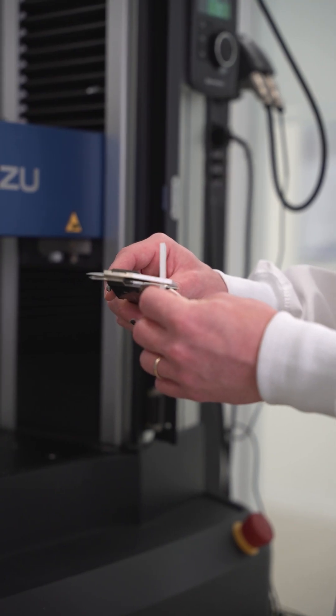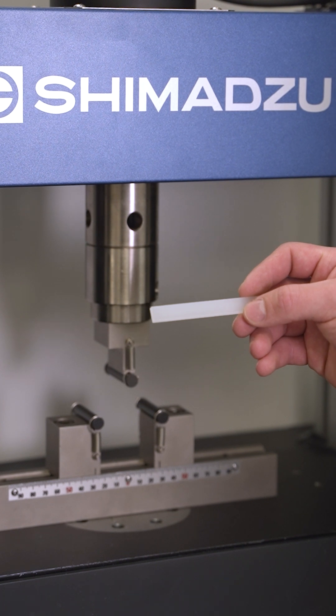Specimens are rectangular plates. The width, length, and test span are determined by the sample thickness.